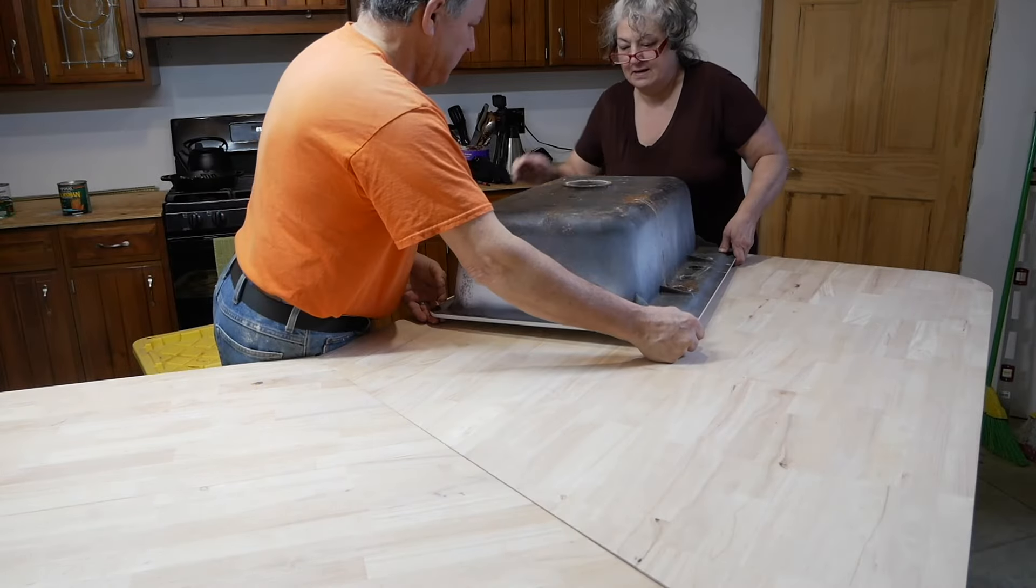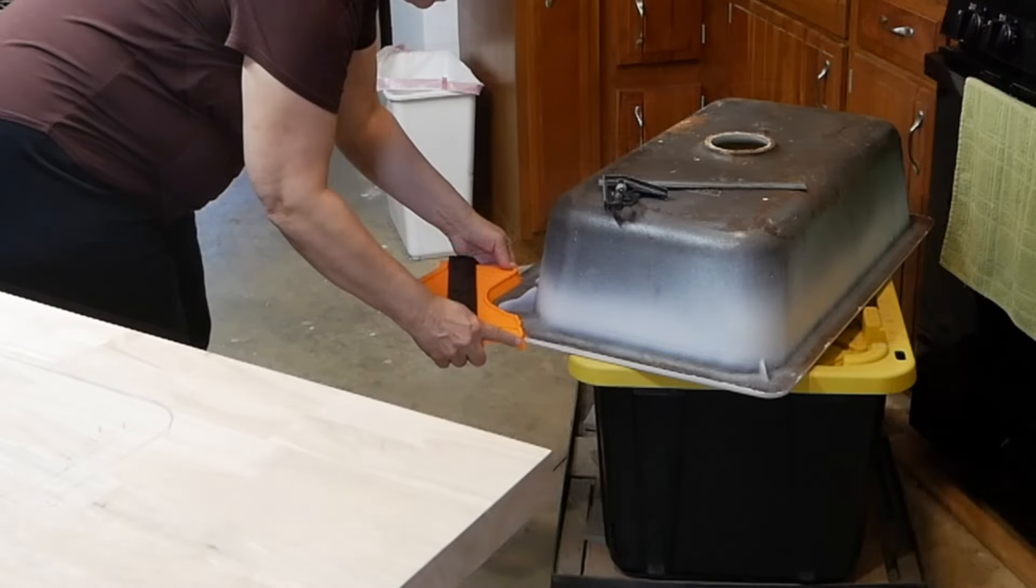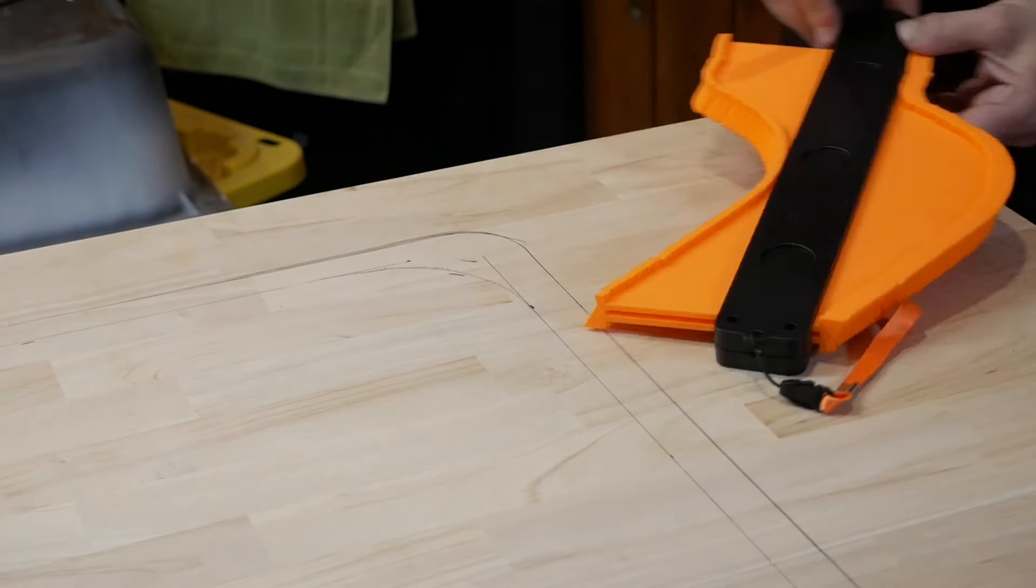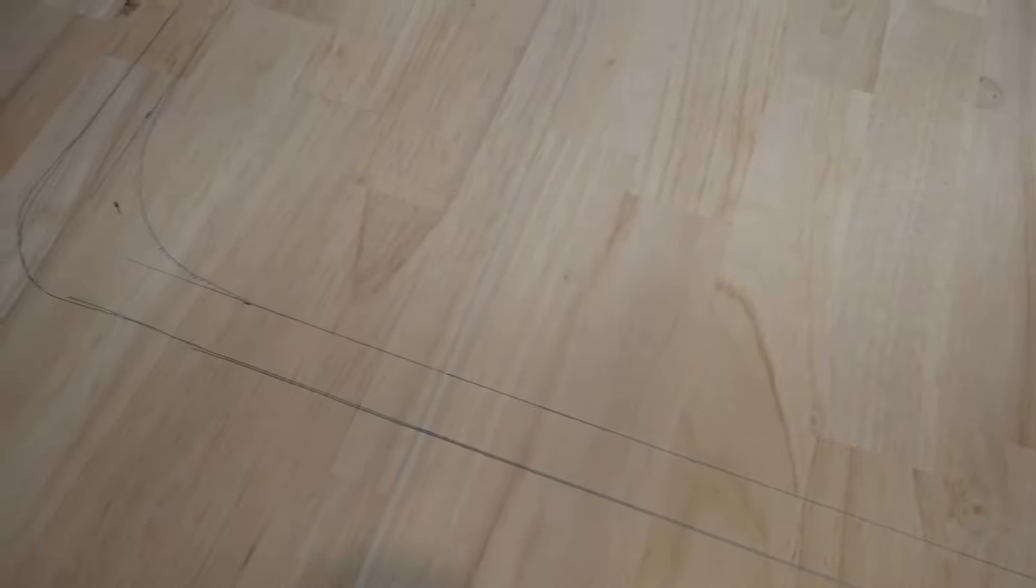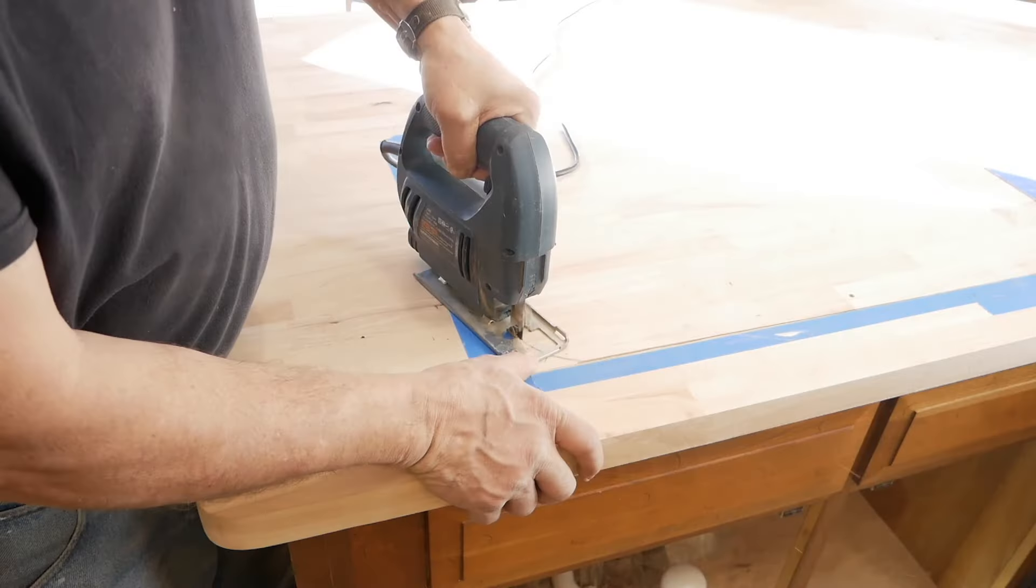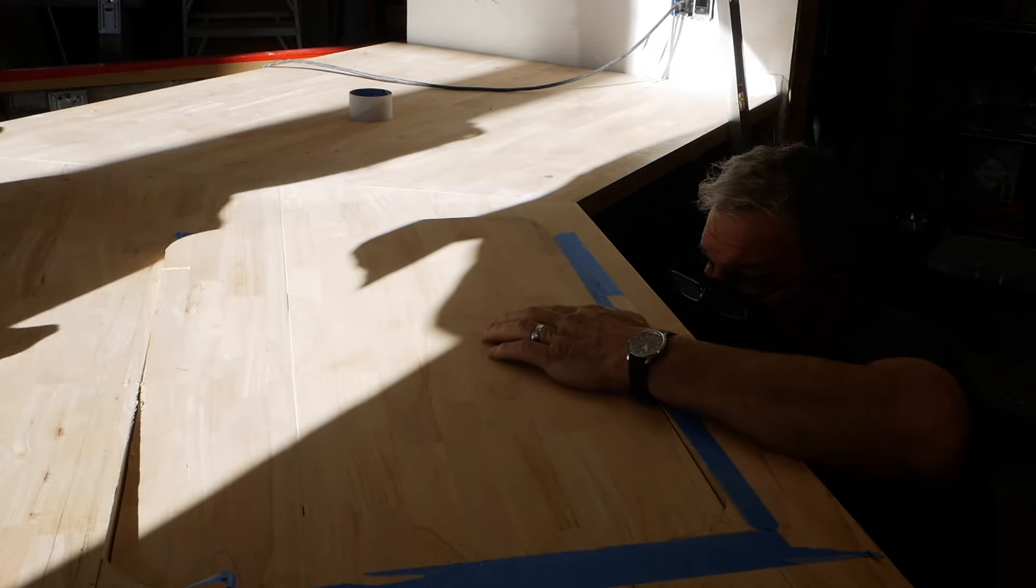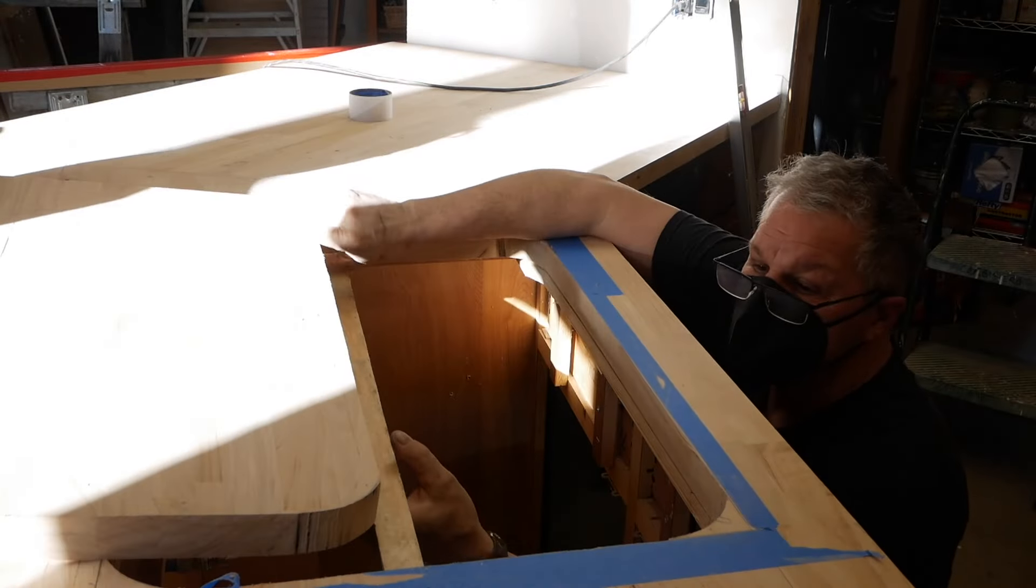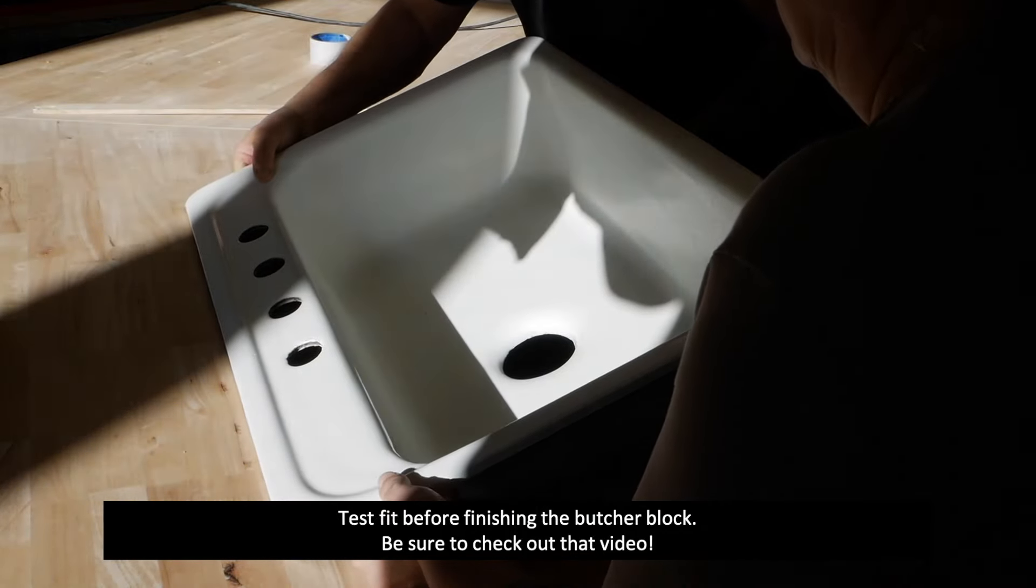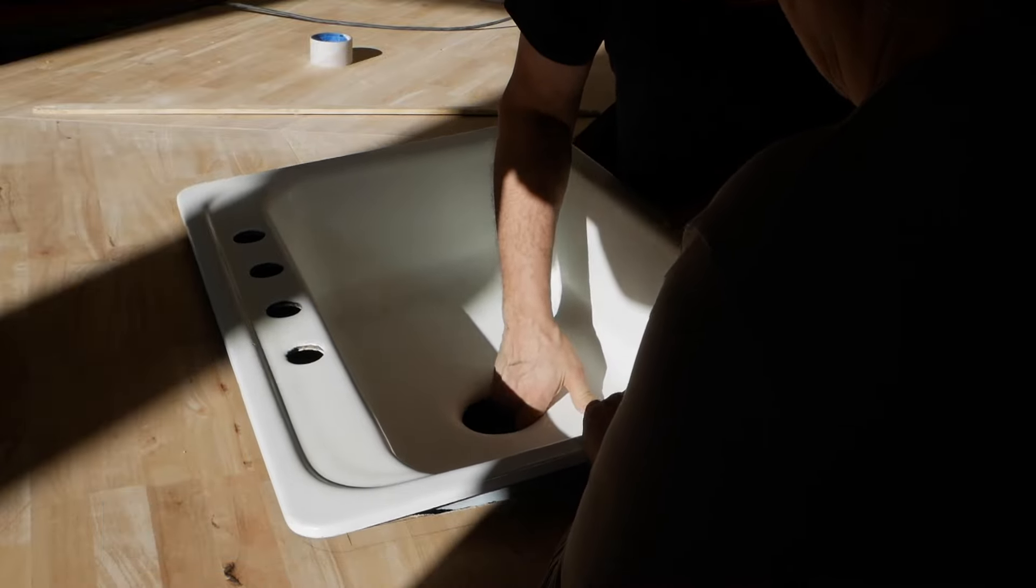We absolutely didn't want to have a metal rim on a butcher block counter, especially because it would have required us to cut a special recessed edge and possibly provide added support from underneath. Making it into a top mount sink allowed us to simply cut the hole in the butcher block to the right size, and we didn't need to add any additional support because the wood is one and a half inches thick, making it strong enough to hold the 75 pound cast iron sink.